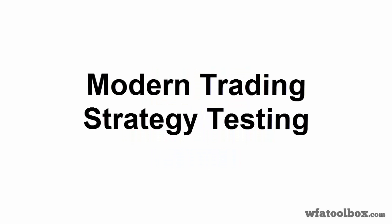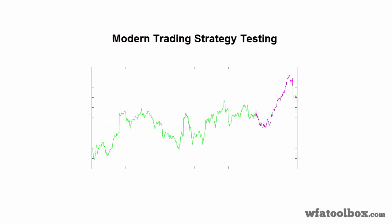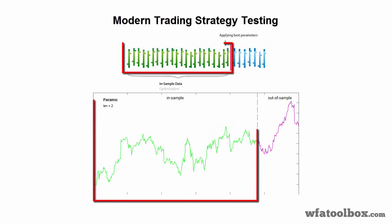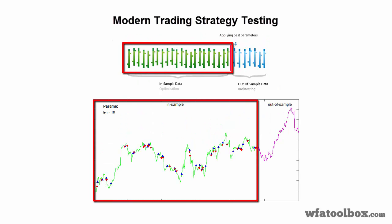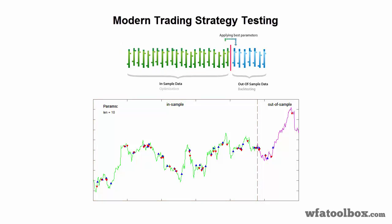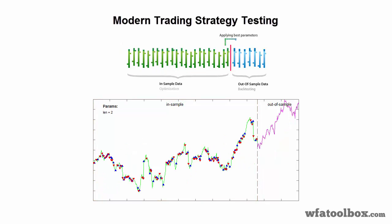Trading strategies testing usually involves the following process. One takes historical data of some asset or several assets, then divides them into two periods with some ratio. Let it be an 8 to 2 ratio for our example. During the first period, called in-sample, we optimize the parameters of the trading system, because real markets change rapidly and it is necessary to adjust and optimize parameters according to new conditions.